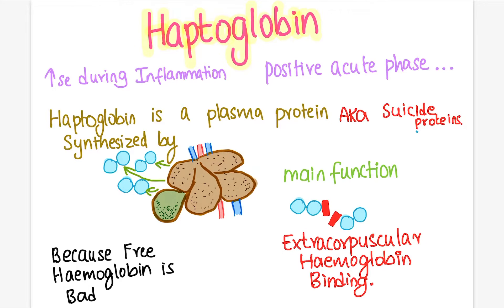The main function of haptoglobin is to bind with extracorpuscular hemoglobin — that is, the hemoglobin present outside the erythrocytes, otherwise called free hemoglobin. Free hemoglobin is bad and our body cannot tolerate it, as it is known to cause a lot of pathological effects.